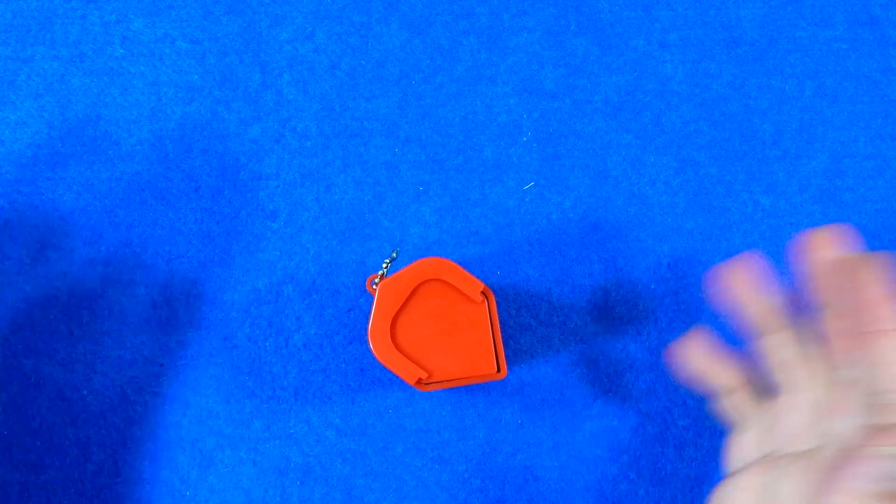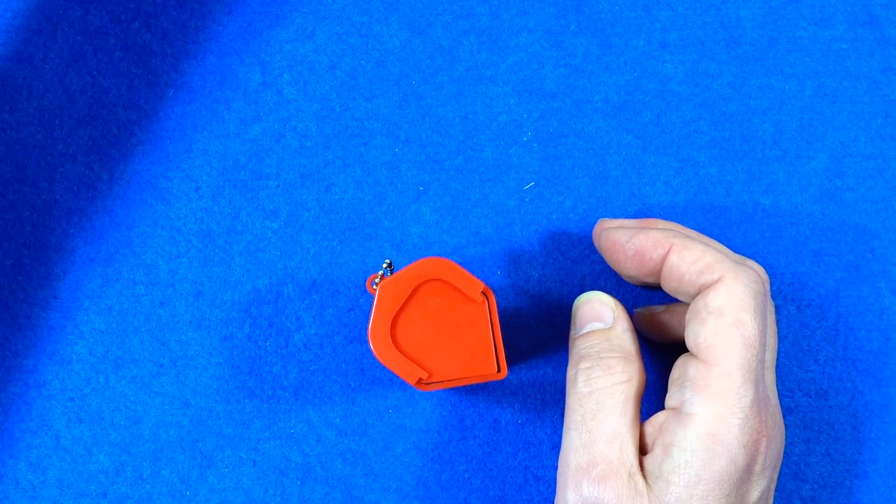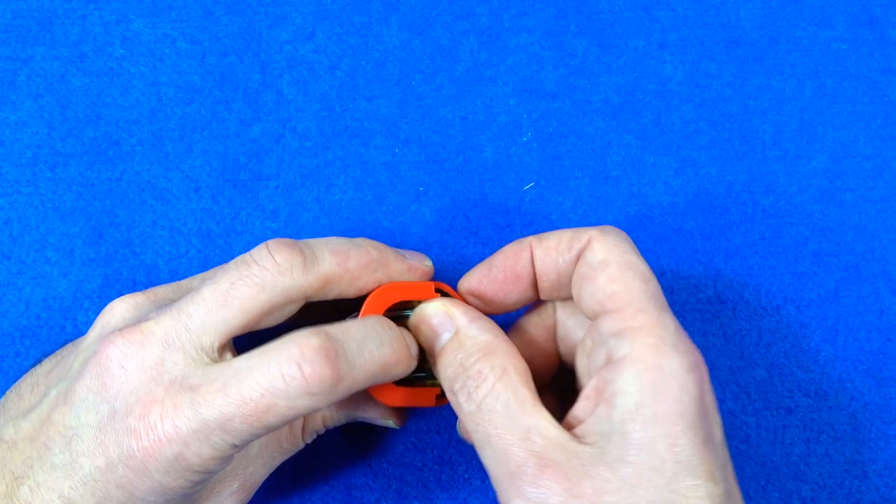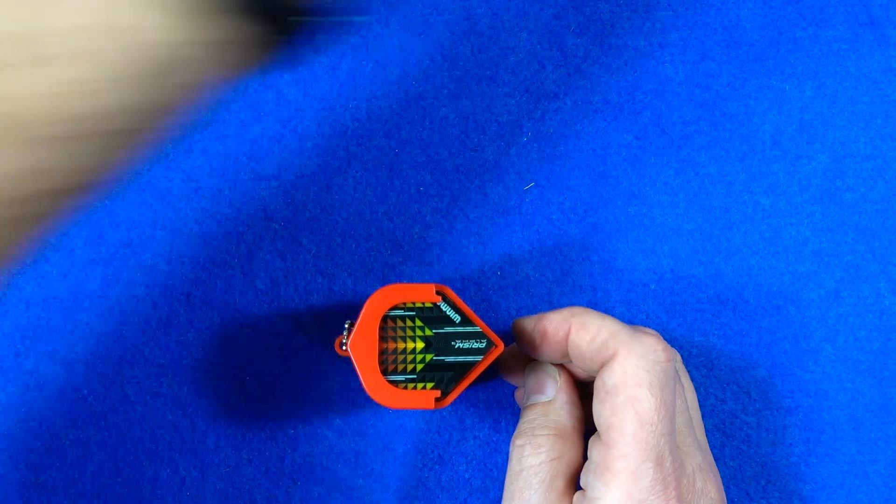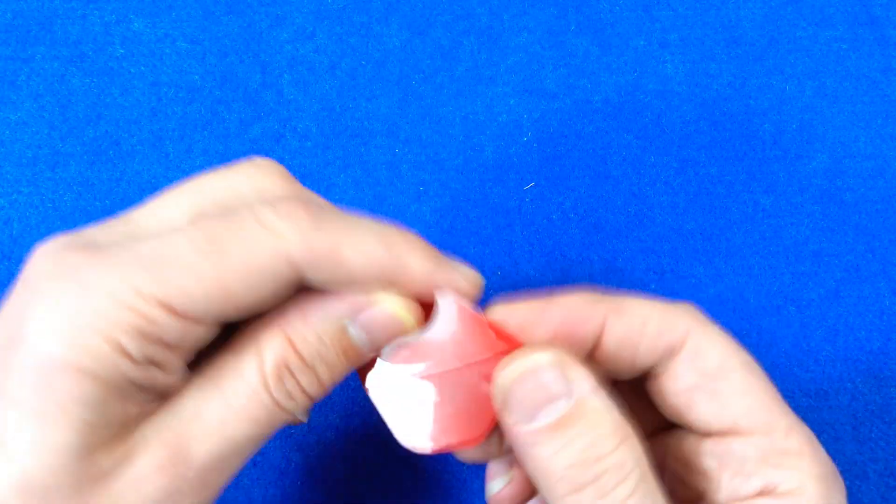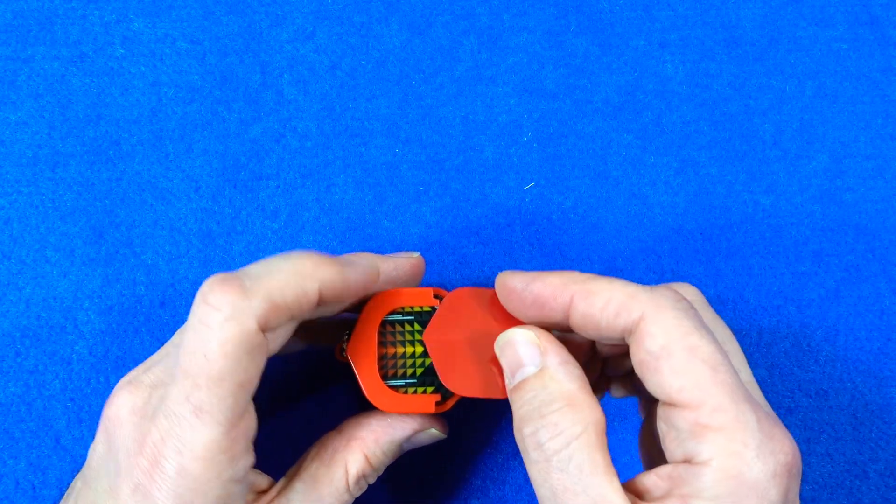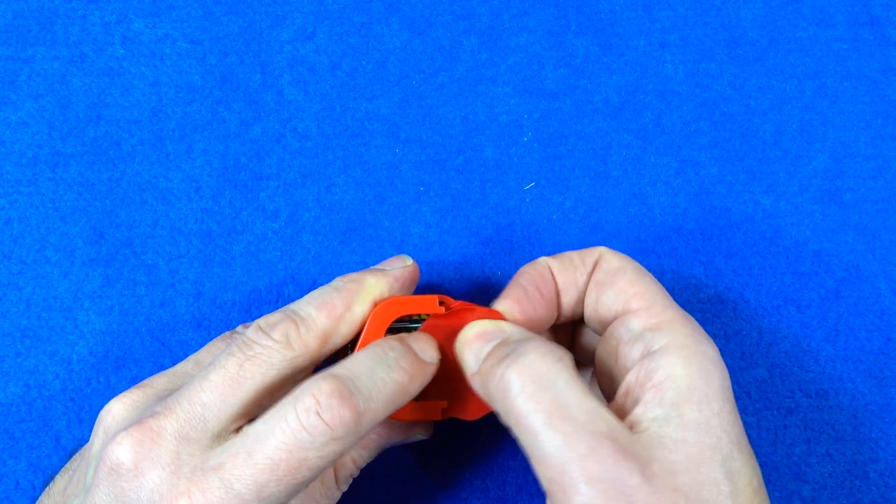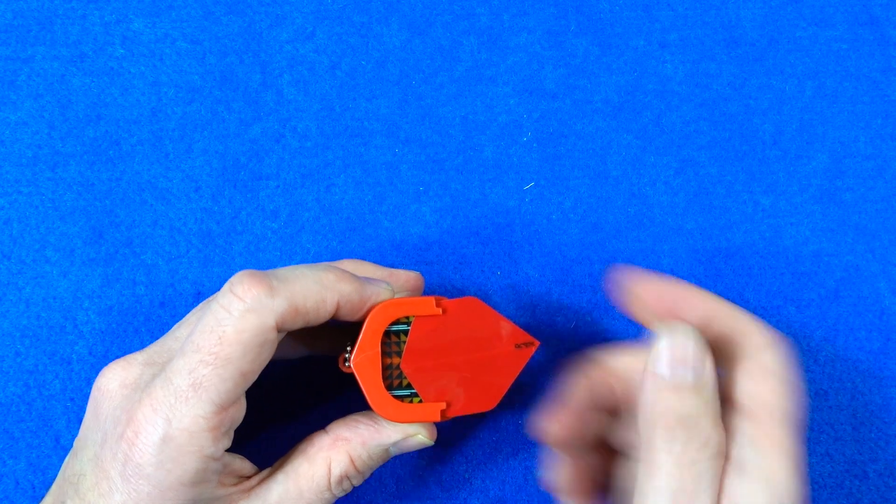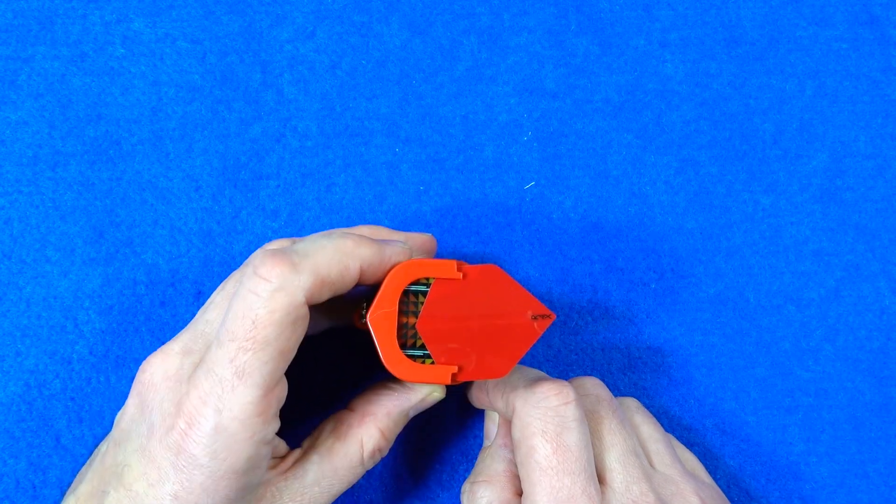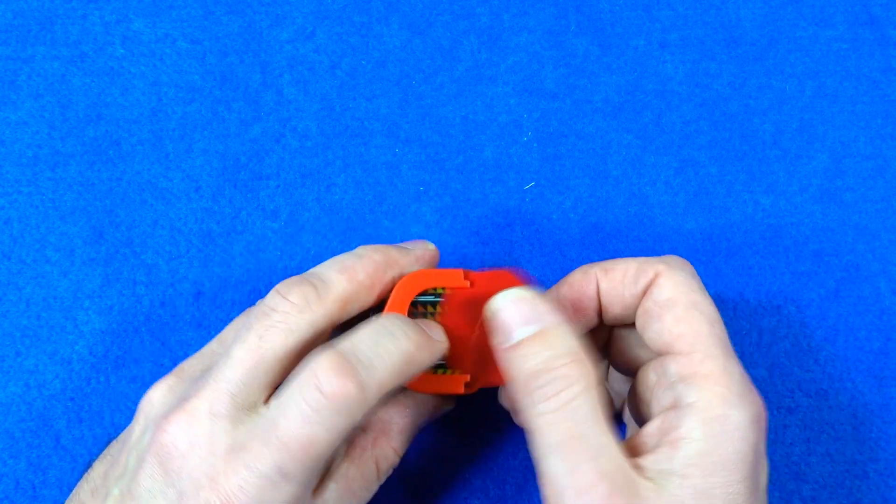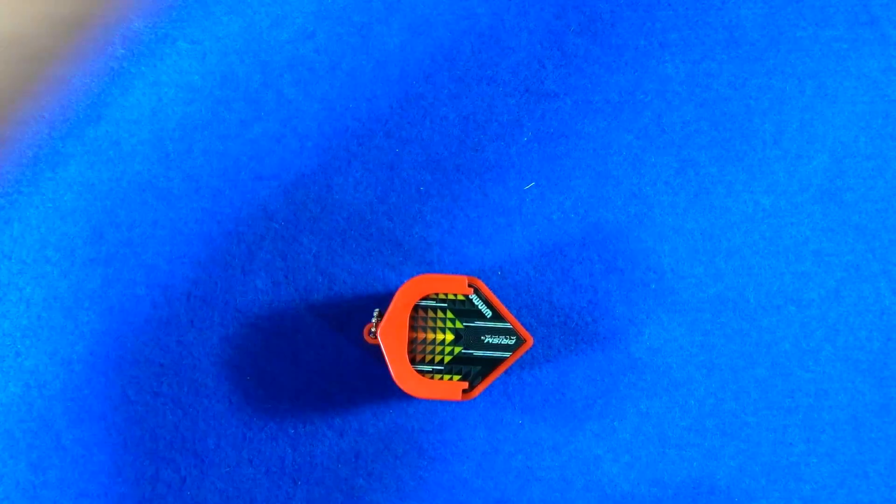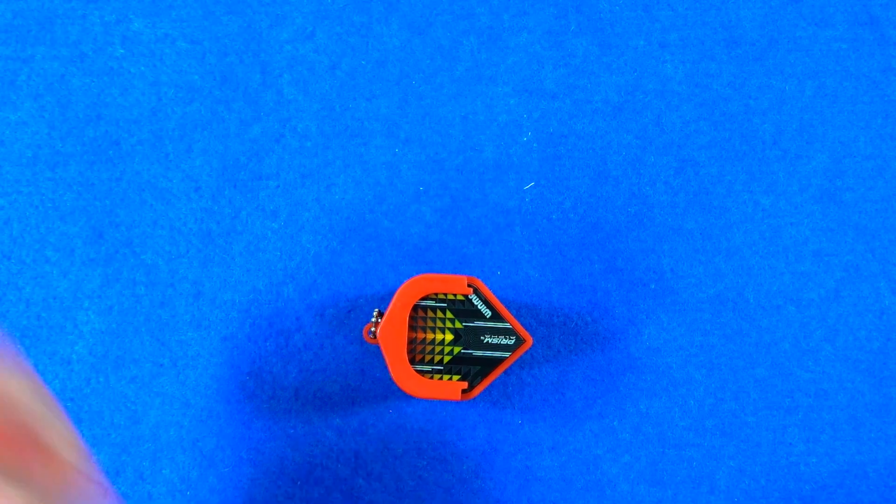I've got some flights here. These are the Winmore Prism, this is a small standard shape, so that fits nice and easy. This is a normal standard number two and that doesn't fit, so that's a little bit disappointing. If you're using normal standards then it's not going to be any good to you. Here's a pear flight.